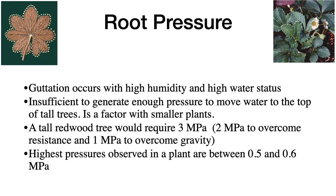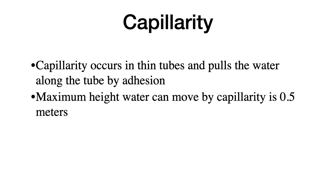Capillarity occurs in thin tubes where adhesion of water to the tube walls pulls water along. Thinner tubes pull water up higher. However, the maximum height that water can move by capillarity is only 0.5 meters — clearly insufficient to account for water movement up a tall tree.